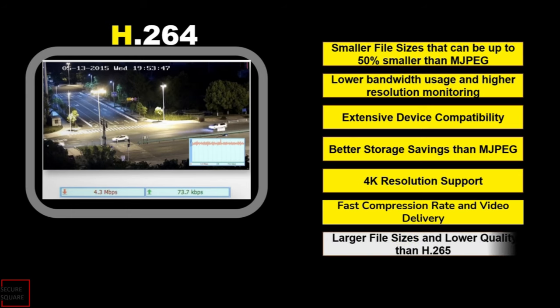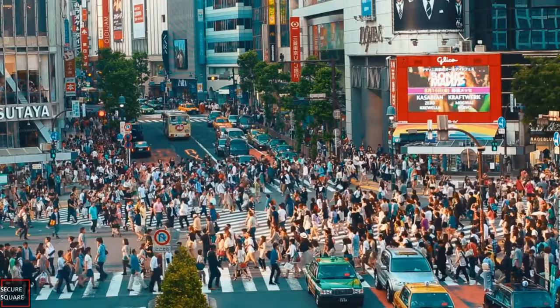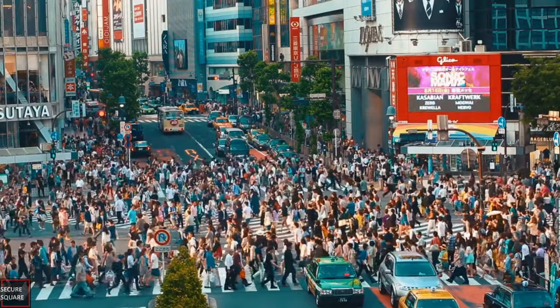H.264 produces larger file sizes and lower quality compared to H.265. The second codec is H.265, or high-efficiency video coding, which is an advanced version of H.264. It offers even better compression, reducing storage requirements further, making it perfect for high-resolution cameras.